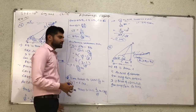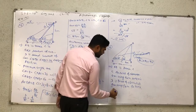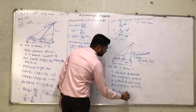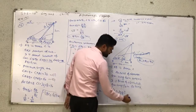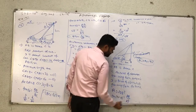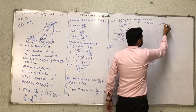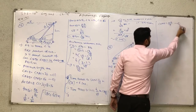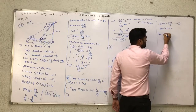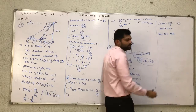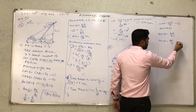Now, for triangle ABD, using tan(90 minus theta) equals opposite side AB divided by adjacent side BD equals 9. Since tan(90 minus theta) equals cot(theta), we get cot theta equals AB divided by 9 — equation 1. Now for triangle ABC, tan theta equals AB divided by BC equals AB divided by 4 — equation 2.